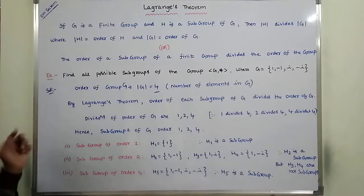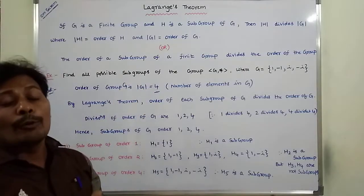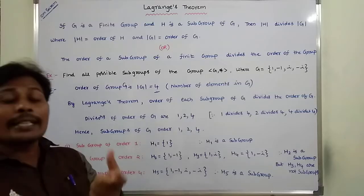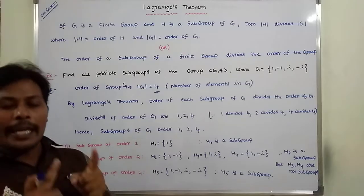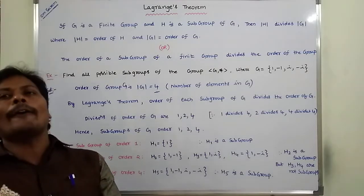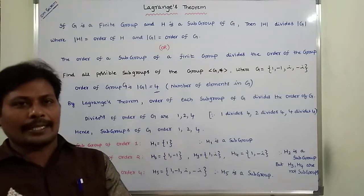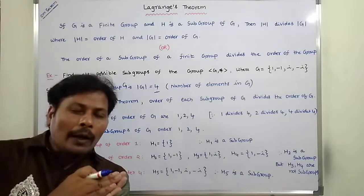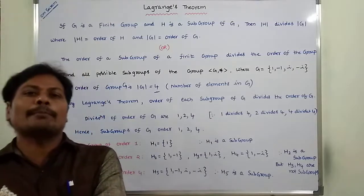For example, if order of G is 8, what are the orders of subgroups of G? What are the divisors of 8? They are 1, 2, 4, 8. So 1, 2, 4, 8 are the subgroup orders — the possible divisions of G.